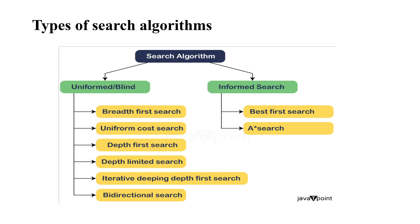Now the next and very important topic is types of search algorithms. We basically have two types: uninformed search, also called blind search, and informed search. Uninformed search is further categorized into breadth-first search, uniform cost search, depth-first search, depth-limited search, iterative deepening depth-first search, and bidirectional search. Informed search includes best-first search and A* search. In the next video we will see the difference between uninformed and informed search and explore these algorithms one by one.